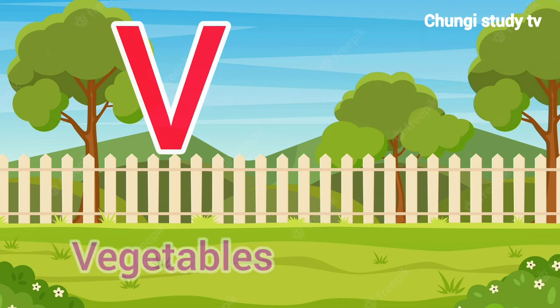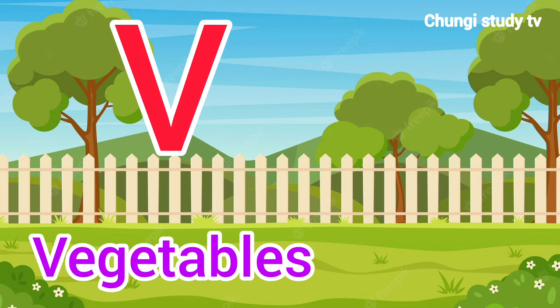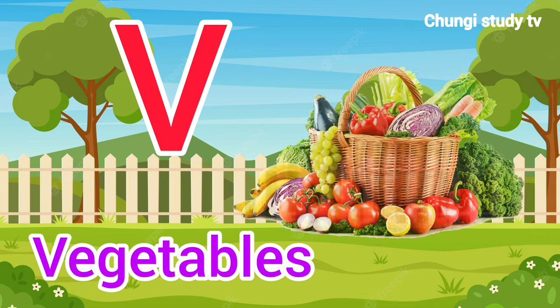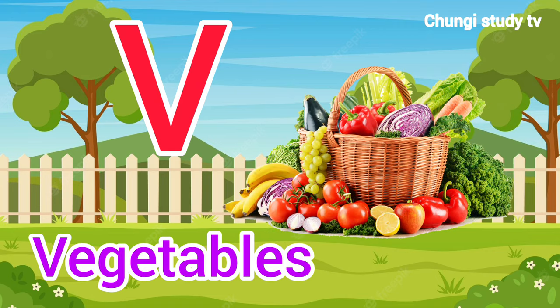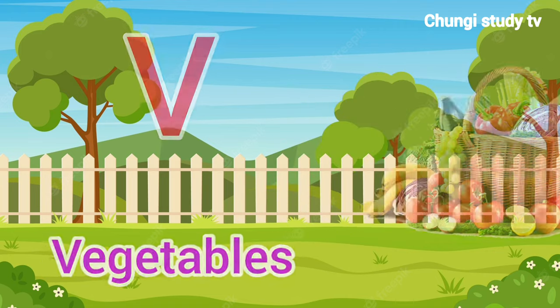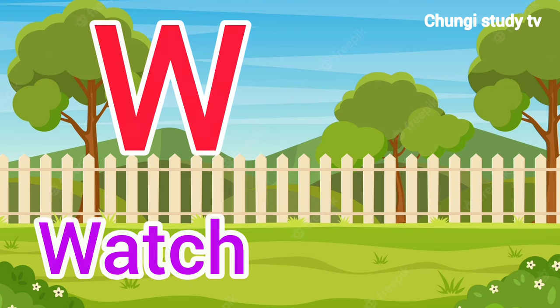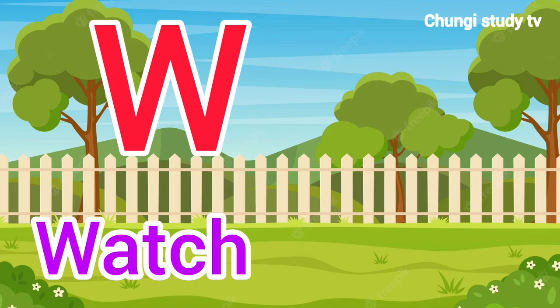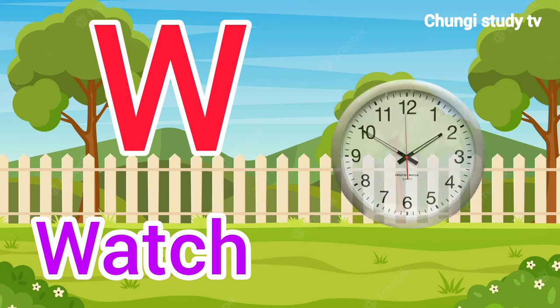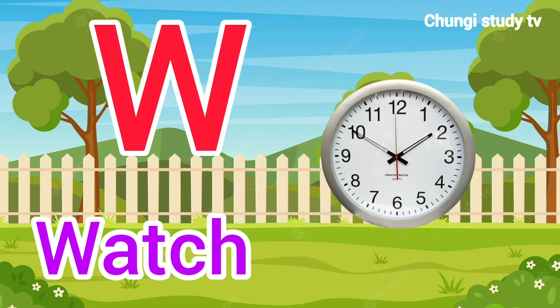V, V for Vulture. Vulture means Ghid. W, W for Watch. Watch means Ghadi.